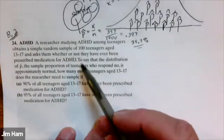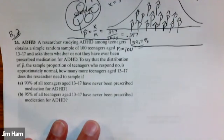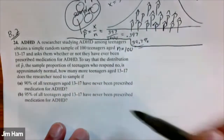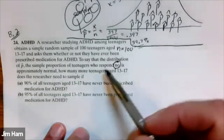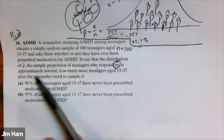This problem is about ADHD. They ask a hundred teenagers whether they've ever been prescribed medicine for ADHD. The goal is to describe the distribution of p-hat — the sample proportion of teenagers who respond no. Their success is identifying teenagers who have never been prescribed medicine for ADHD.